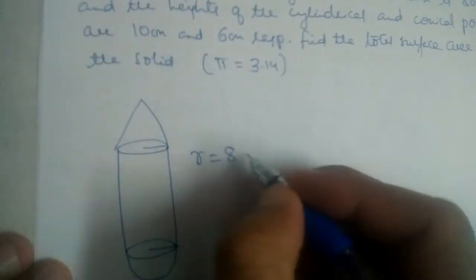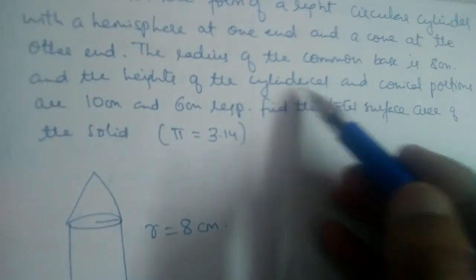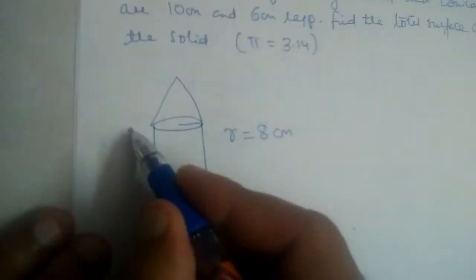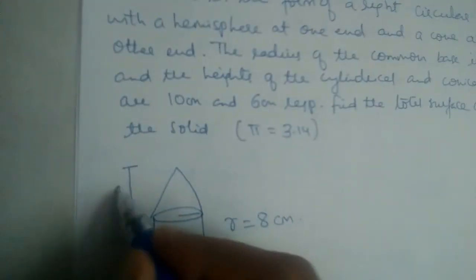Radius is equal to 8 centimeters and the height of cylindrical and conical portions are 10 and 6 respectively. Cylinder height is 10, cone height is 6 centimeters.